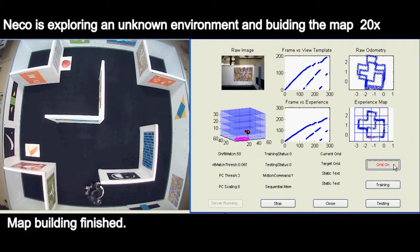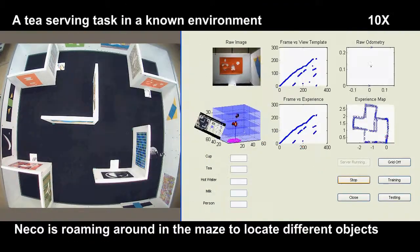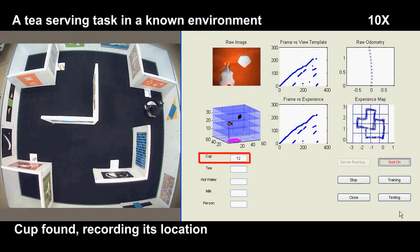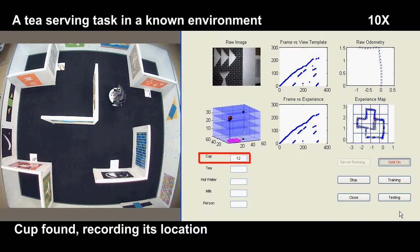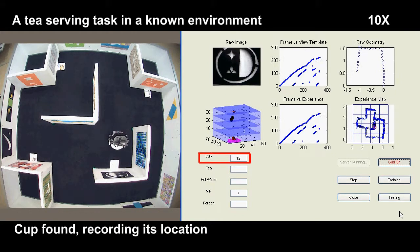Cognitive map building finished. Niko is locating the different objects. Cup found, recording its location. Milk found.